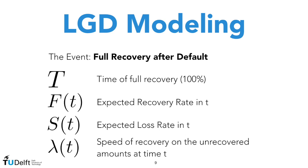When we deal with the modeling of the loss given default, the event itself is no longer the default of the company, but the full recovery of the company. Capital T is now the random time at which we observe the full recovery, so the recovery process is over. With capital F of t, we represent the expected recovery rate at time small t, and with the survival function capital S of t, we represent the expected loss rate in t. Remember that S of t is equal to 1 minus capital F of t. For what concerns the hazard rate lambda t, this will be the speed of recovery on the unrecovered amounts at time t.